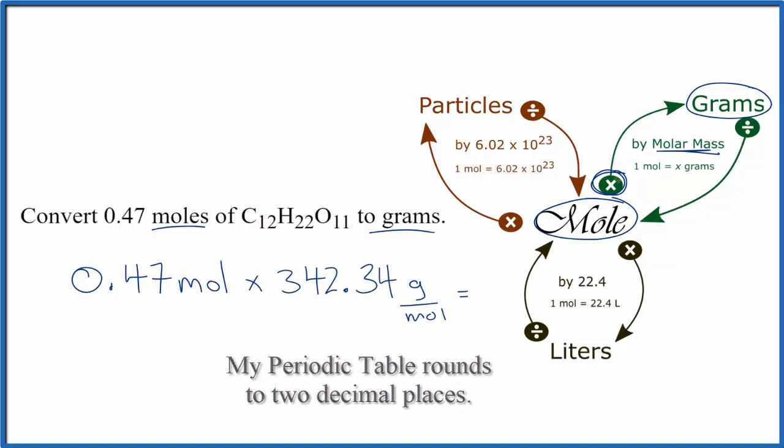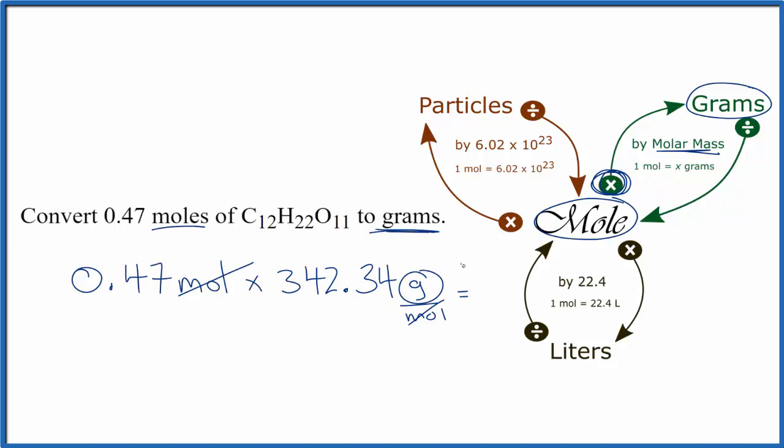We go from moles to grams, we multiply. So when we do that, the moles, we have moles on top and the bottom. That leaves us with grams, and that's what we're looking for here. So we end up with 160.90 grams of sucrose.